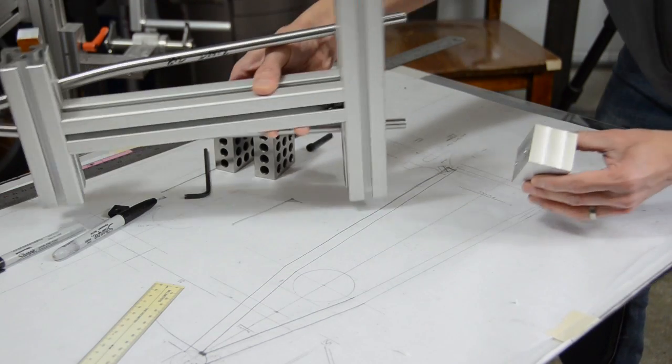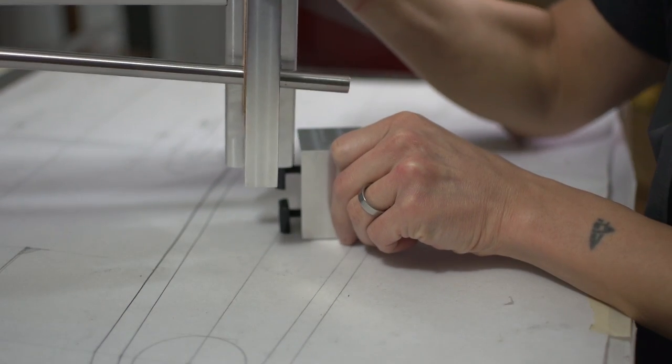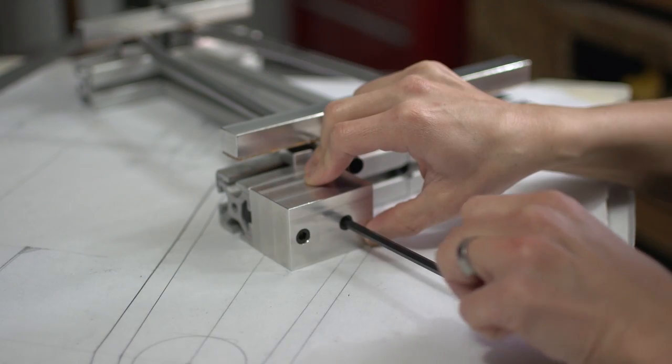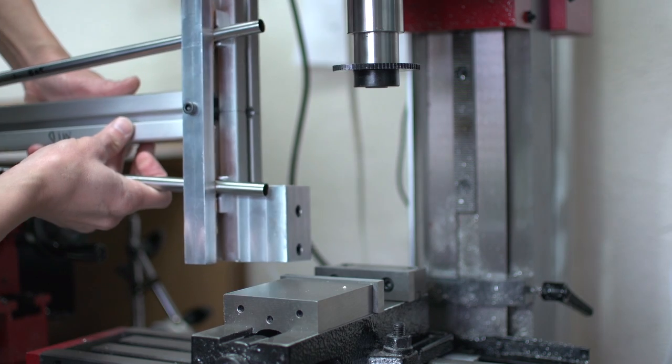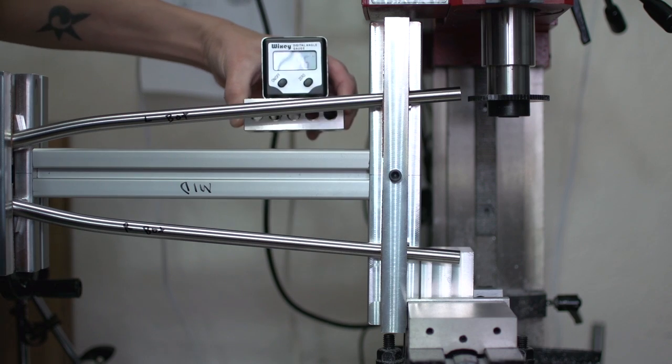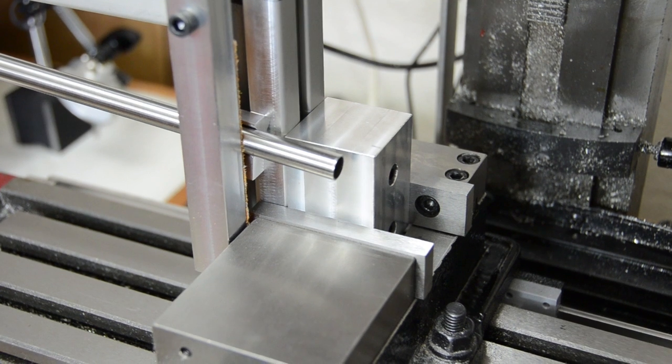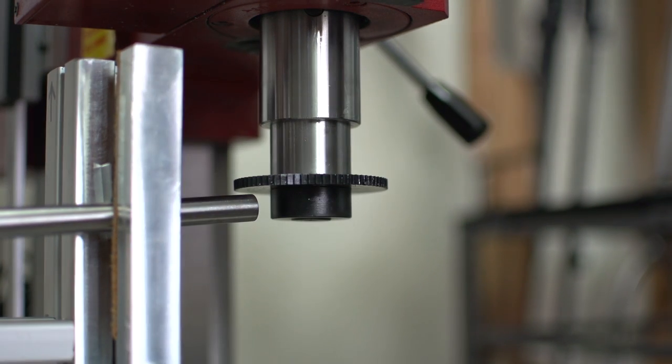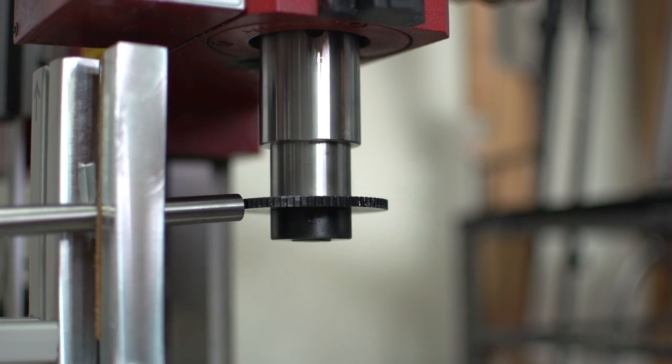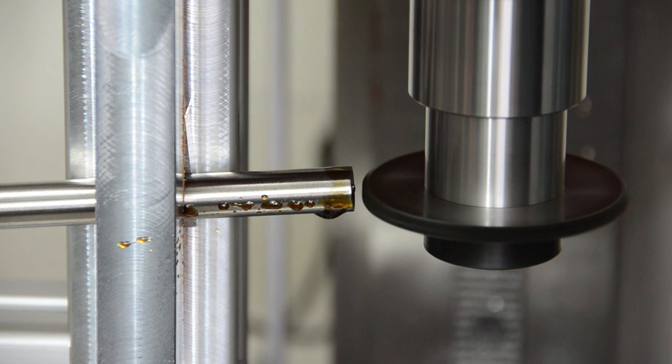Now it's just a matter of giving the vise jaws something to clamp onto. And yeah that'll do block. That'll do. Now it's just a matter of noting the top of the tubing, zeroing out my DRO, and then lining up my cut. I'm doing this so that when I notch the other seat stay I can measure down and land the cut in the same place.